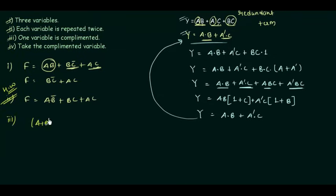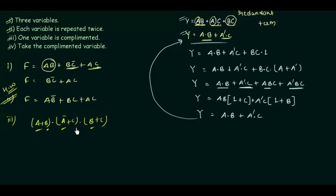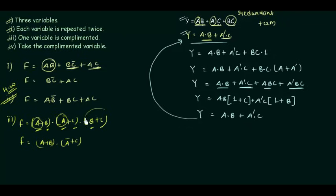Example three: (a or b)·(a-complement or c)·(b or c). We check for three variables a, b, and c — each is repeated twice. One variable is complemented: a is complemented. Taking the terms containing a, the reduced function f is (a or b)·(a-complement or c), and the term (b or c) is omitted because it contains no a.